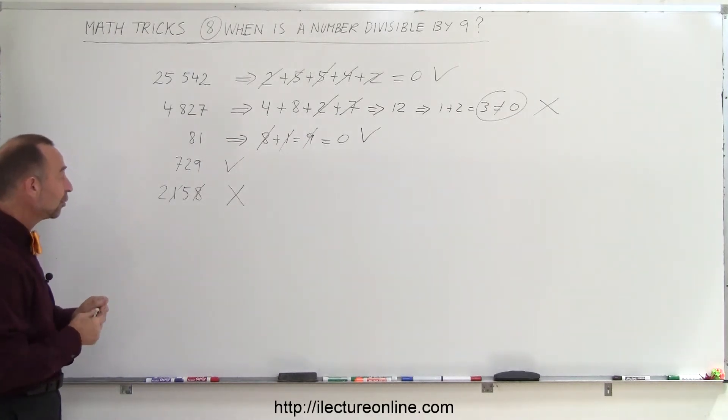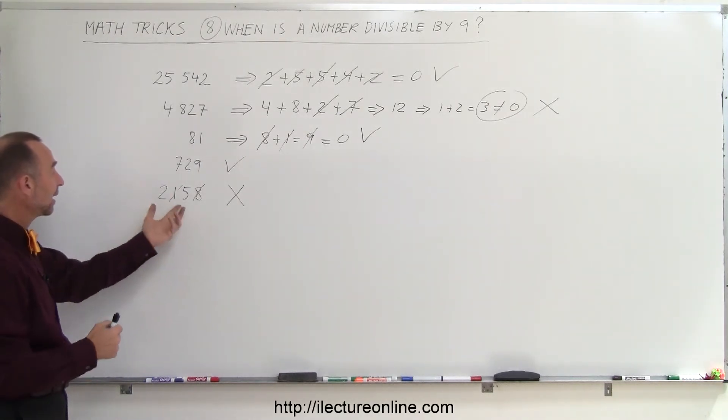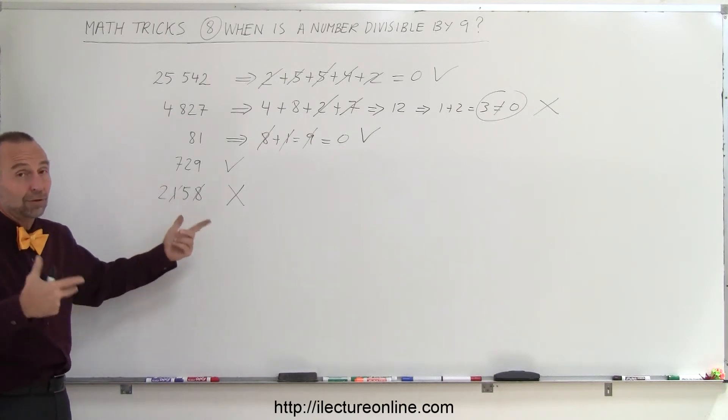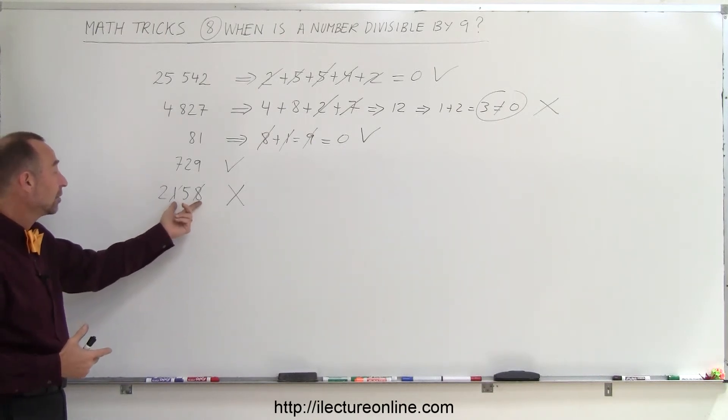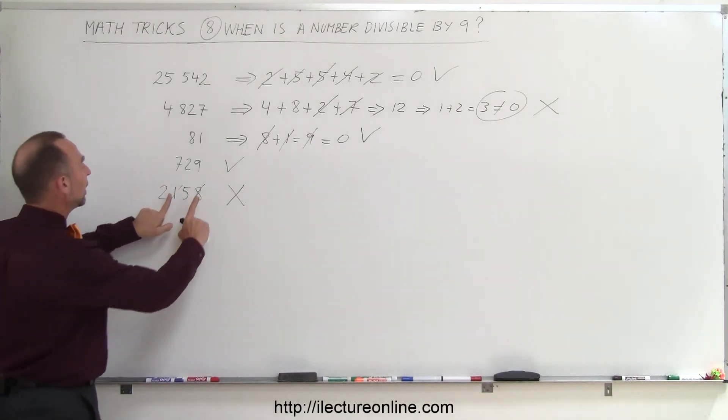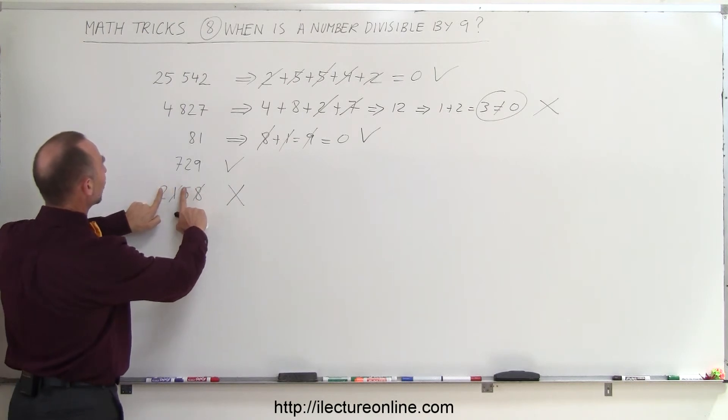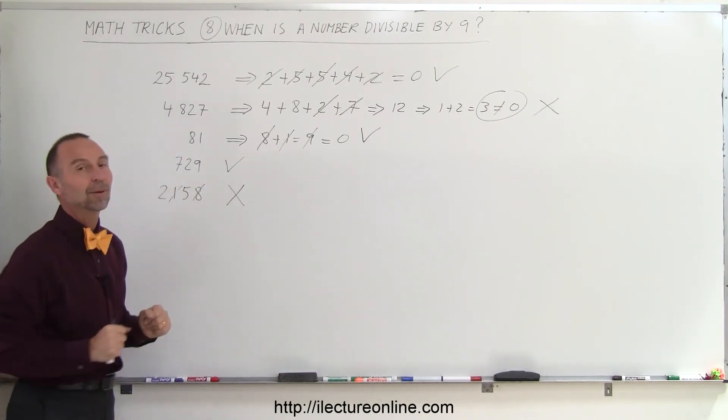That's as simple as it is. All you have to do is add the numbers together. Anytime you have two numbers, or three or four, that add up to 9, you can get rid of those. So when 1 and 8 are gone, you're left with 2 and 5. 2 plus 5 is 7—not divisible by 9.